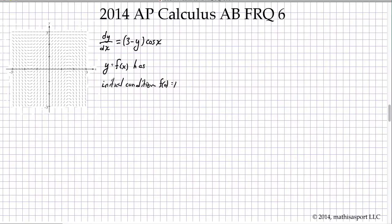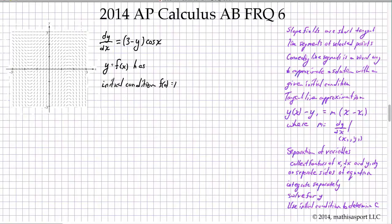Differential equations — these can be fun. We're going to use a slope field to sketch an approximate solution, use the tangent line to approximate a value near an initial condition point, and finally do separation of variables to find the exact solution with the given initial condition. On the right are some key things to remember to attack those problems. Let's start with part A.